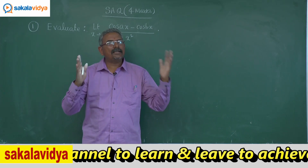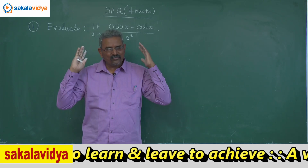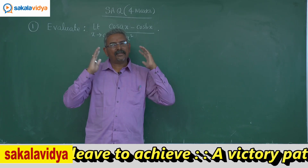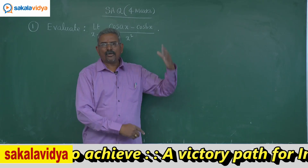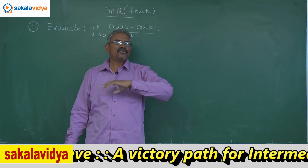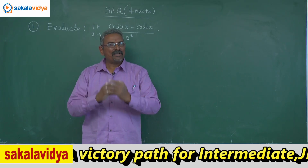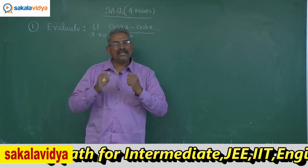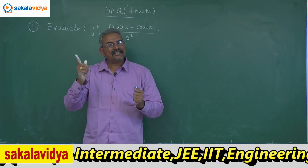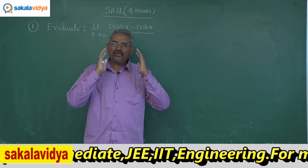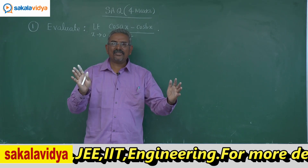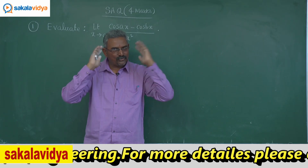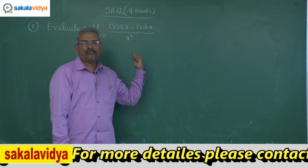The answer is b squared minus a squared by 2. This is also a shortcut to be applied in competitive examinations. Whenever the problem is in the form: limit x tends to 0 of [cos(ax) minus cos(bx)] divided by x squared, the answer is b squared minus a squared by 2. In any competitive examination you need not apply any steps — directly apply this if the problem is in this form.